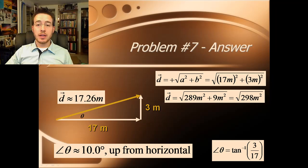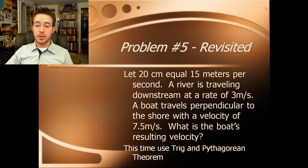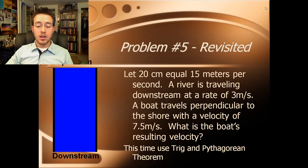All right, so let's go ahead and move on to our final problem. Now, we've done this problem before graphically. Let's do it again, but this time let's do it with trig and Pythagorean Theorem. So, a river is traveling downstream at a rate of 3 meters per second. A boat traveling perpendicular to the shore with a velocity of 7.5 meters per second. What is the boat's resulting velocity? Okay? Again, remember velocity, we're asking for both direction and magnitude. Go ahead and stop the video now, and do your own solution, and then restart the video when you're ready to see my solution.